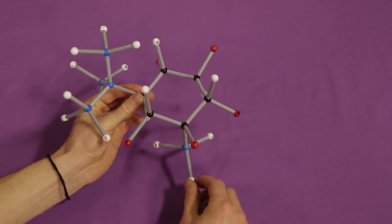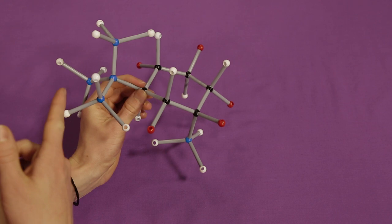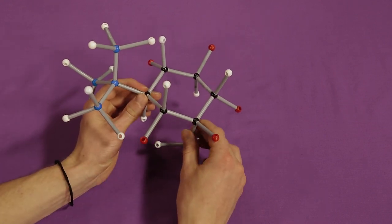In fact, it will always be the case that the cyclohexane will be the most stable when its bulkiest substituents are in the equatorial positions. Thank you.